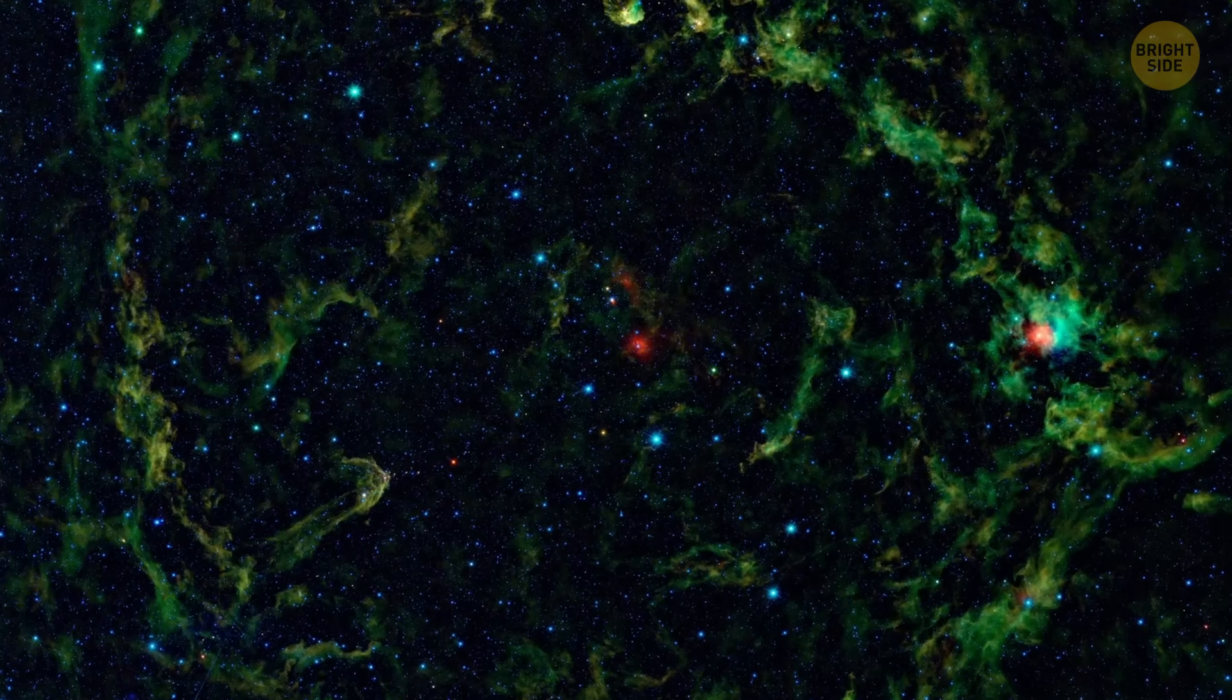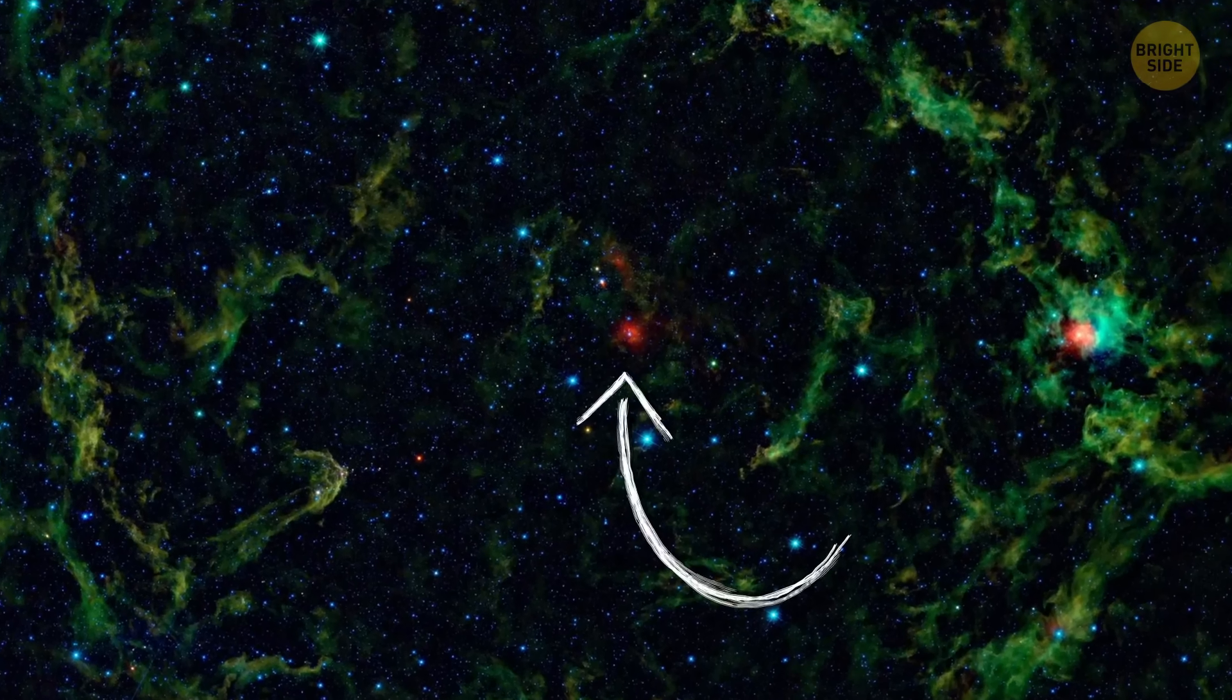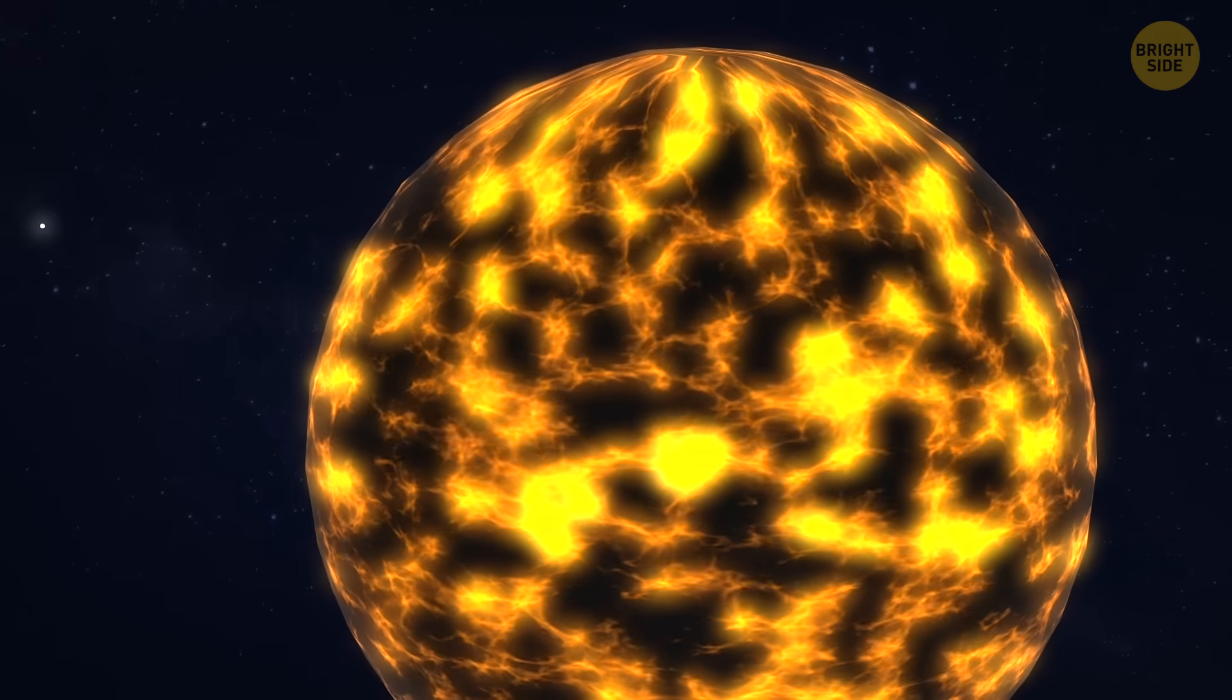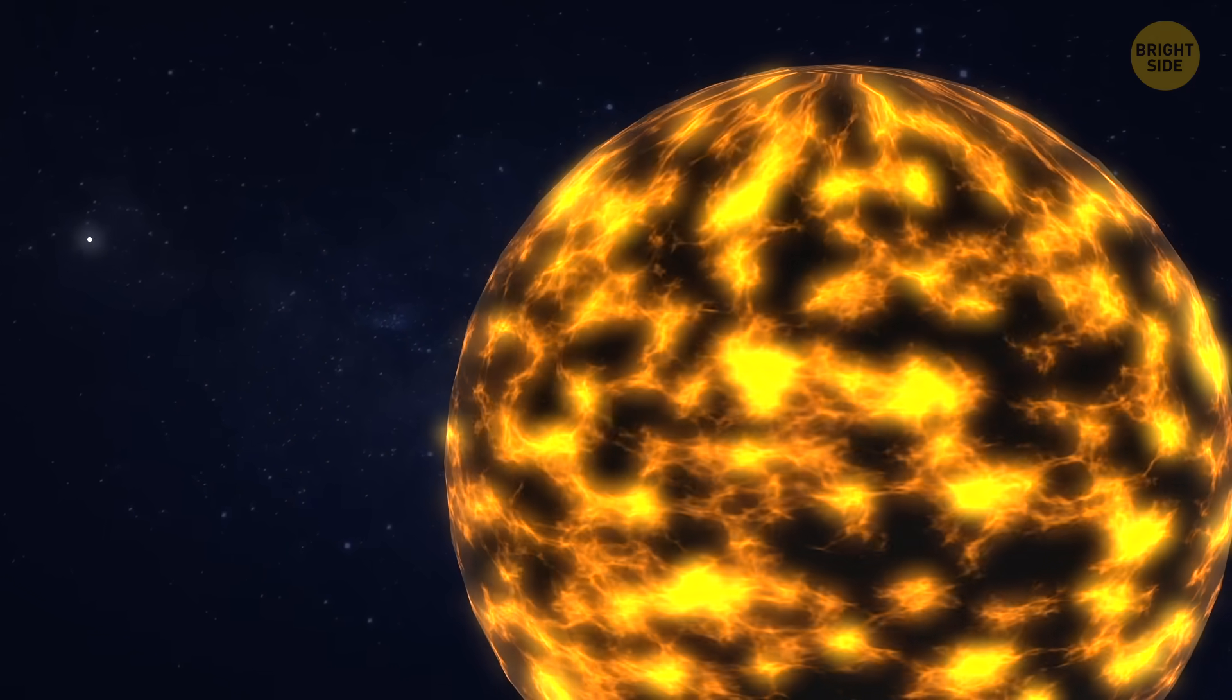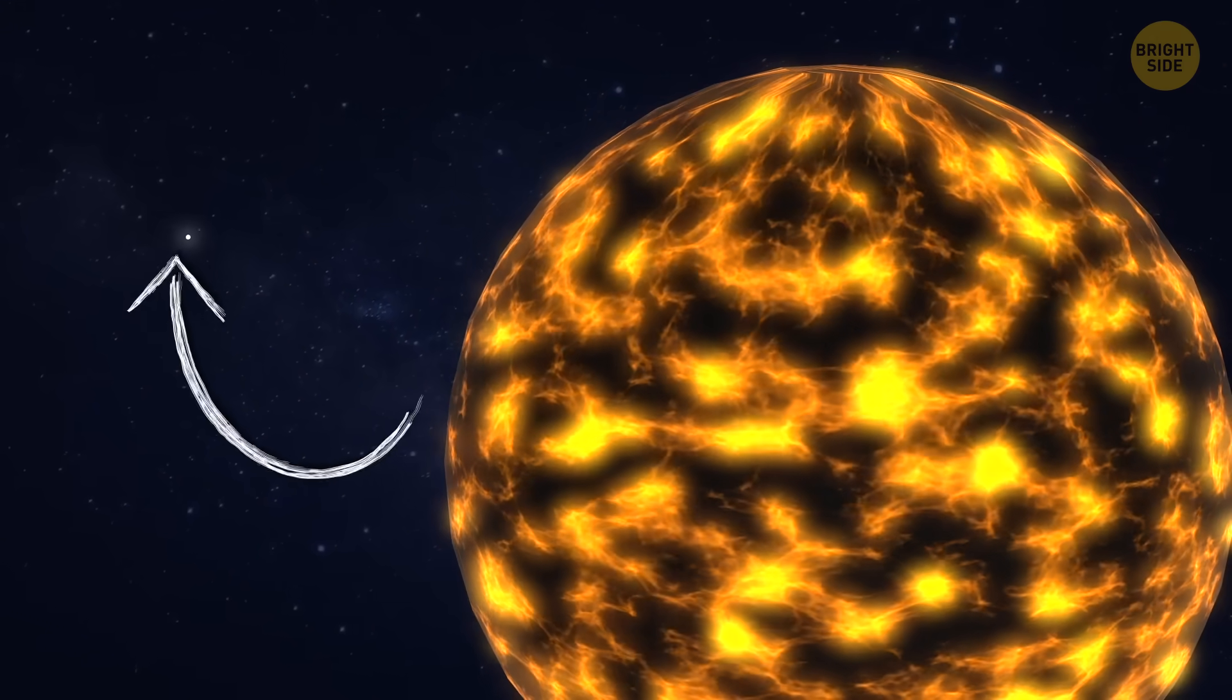This careful search led them to a single object, a tiny dot in the infrared data. This strange little spot had moved slightly along its orbit around the Sun over the 23 years between IRIS and Akari.